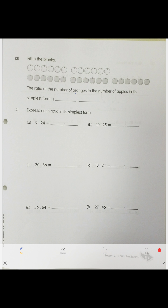Next problem: find the ratio between the number of oranges and the number of apples in simplest form. We don't need to count all of them — they're already grouped. There are two groups of oranges and three groups of apples, so the ratio is 2 to 3.